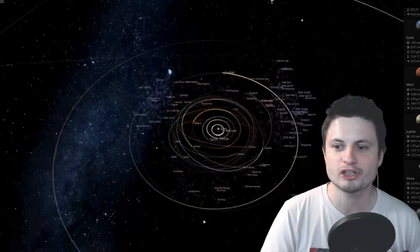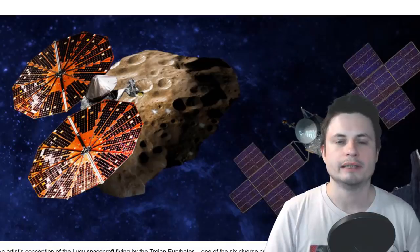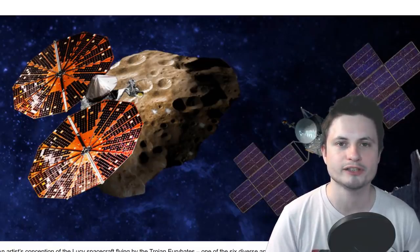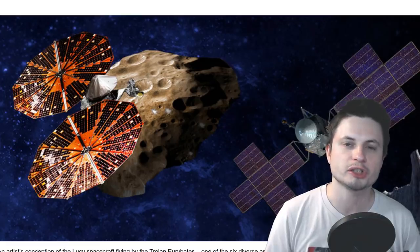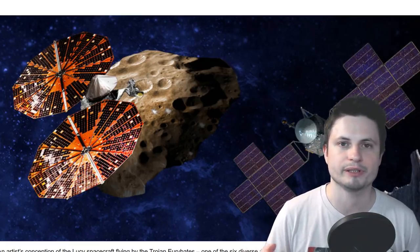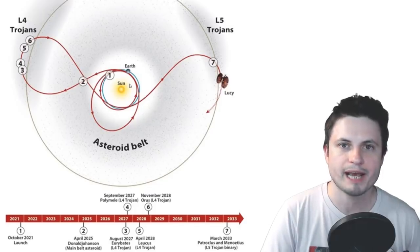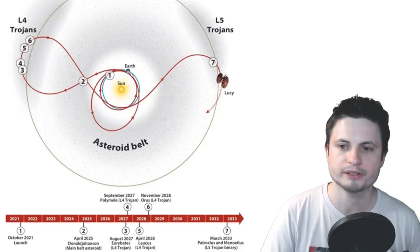NASA decided that it actually wants to launch a mission here. In 2021, NASA is going to be launching a mission known as Lucy that's going to do just that. It's actually going to go to Jupiter's Trojans and visit both of the camps, the so-called Greek camp and the Trojan camp. Here's actually what the path will look like.